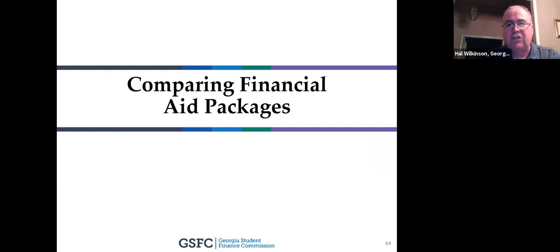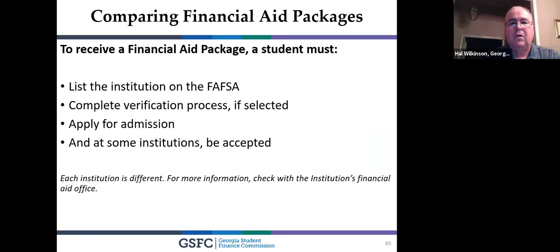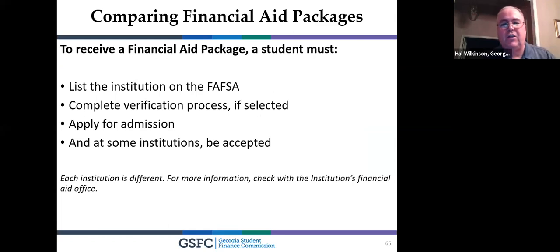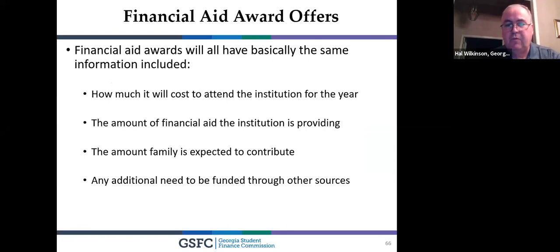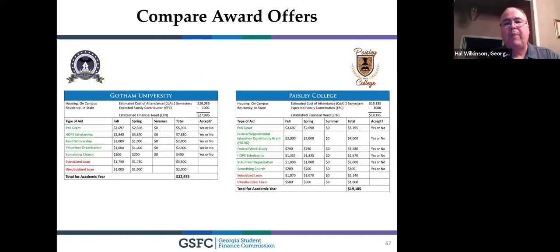When comparing financial aid packages: you've submitted the FAFSA to up to 10 colleges, in-state or out-of-state. You may be selected for verification to confirm your numbers are correct. Once accepted by an institution, you receive a financial aid award letter telling you the total cost, what you owe, federal and state aid received, and other scholarships for the academic year. Compare award letters to decide between in-state and out-of-state options.